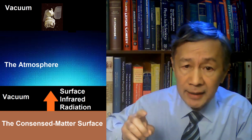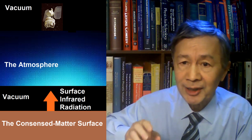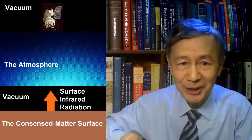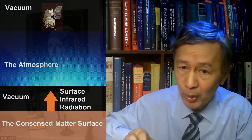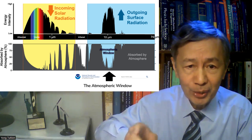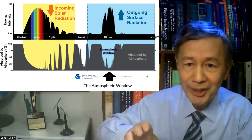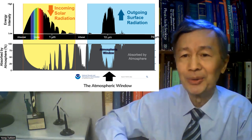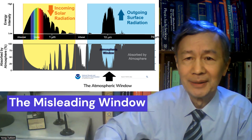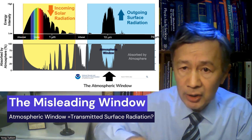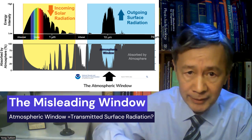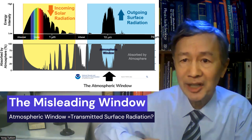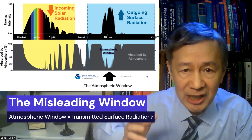Indeed, that is exactly what climate researchers have assumed since 1860, when the infrared absorption by water vapor and CO2 were observed by Tyndall. Hence, the observed dip in the lab was naively called the 'atmospheric window,' through which surface infrared irradiation can go directly to outer space. For this reason, transmitted surface radiation has often been used as a synonym for the atmospheric window among climate researchers, despite them being conceptually different.